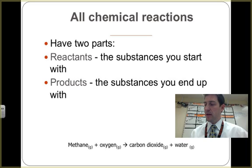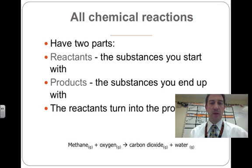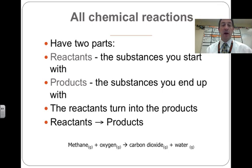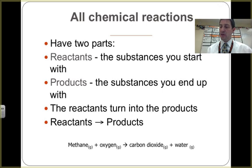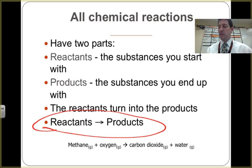The products is whatever you end up with. In the case of our example up here, that would be carbon dioxide and water. The reactants turn into the products. And one thing that's very important when we start drawing out these equations, and especially the balanced chemical equations, we need to show that the reactants turn into products.